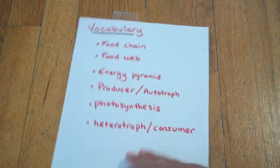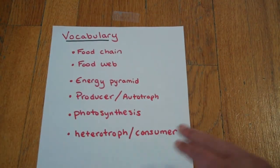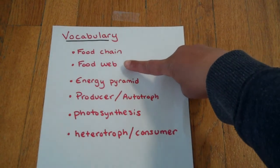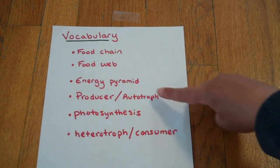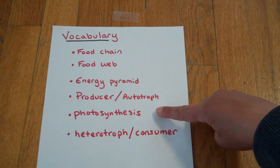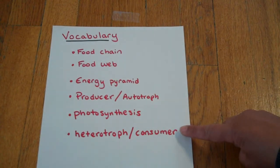The vocabulary words for this lesson are food chain, food web, energy pyramid, producer, autotroph, photosynthesis, heterotroph, and consumer.